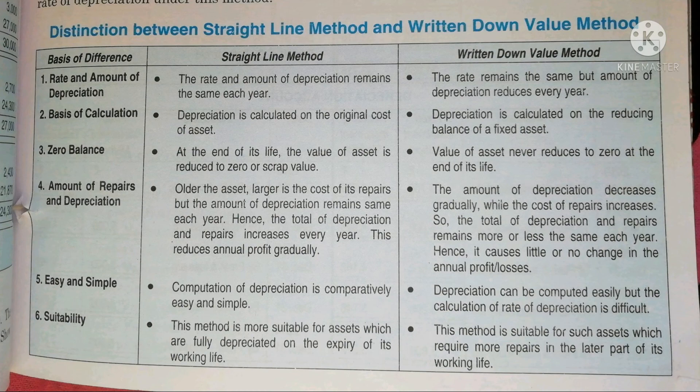Under the Written Down Value Method, we calculate the book value of machinery — that is, the cost value minus depreciation gives the book value. Every year we recalculate the book value of machinery, and in this way the amount of depreciation reduces every year.